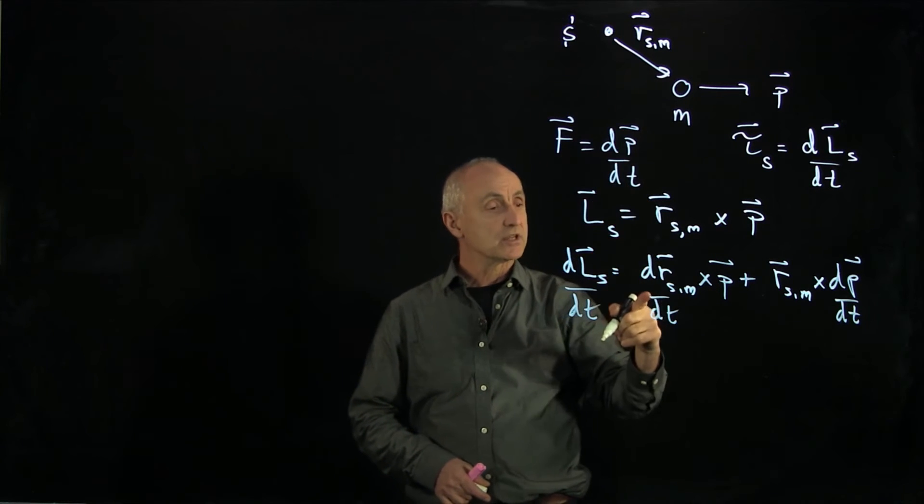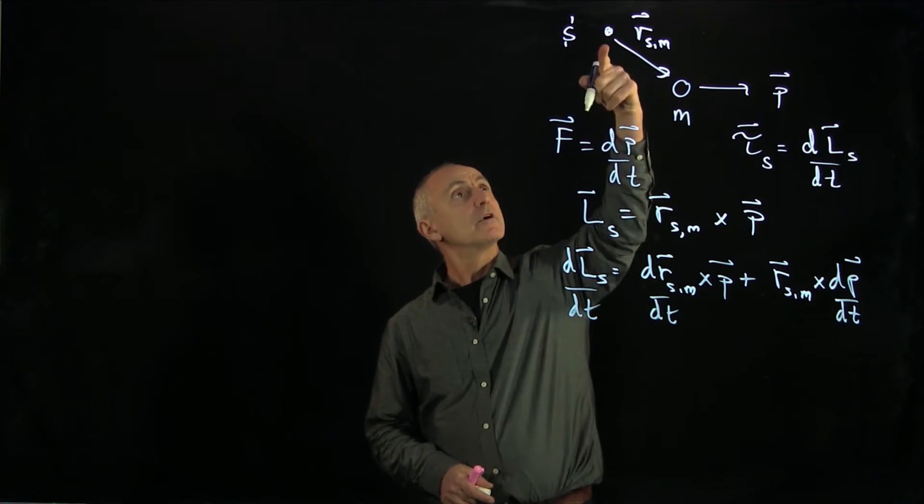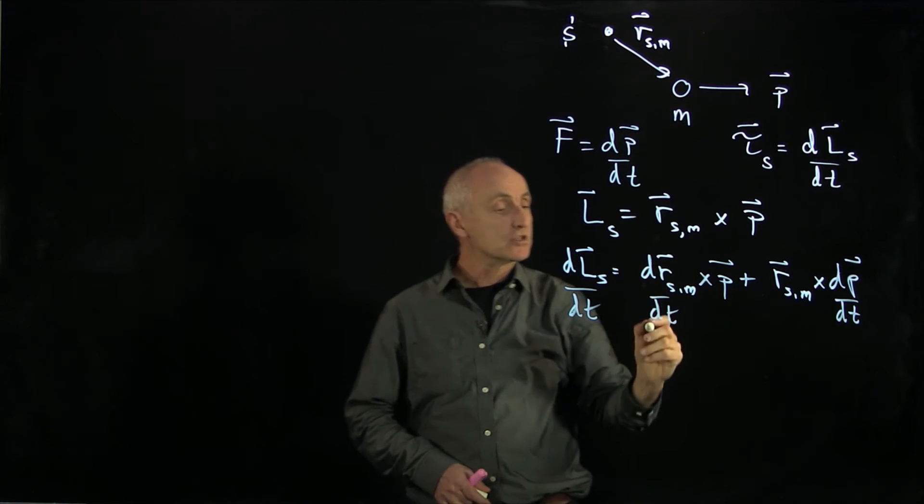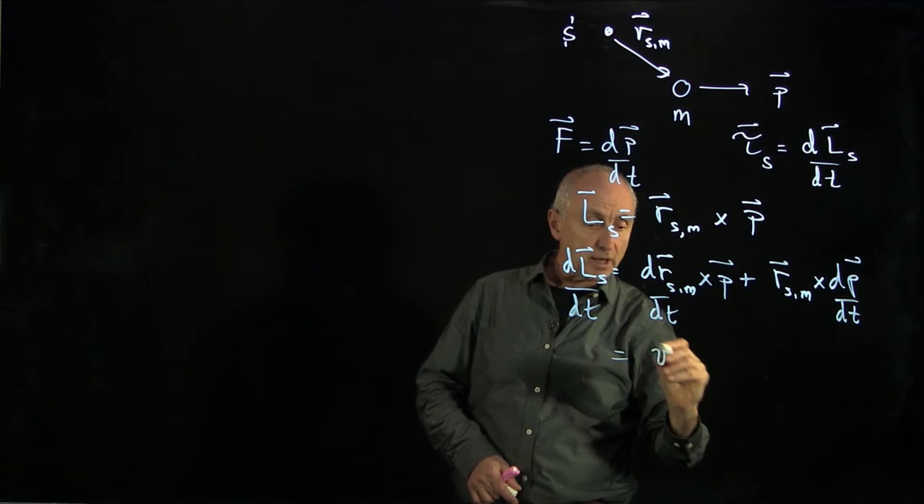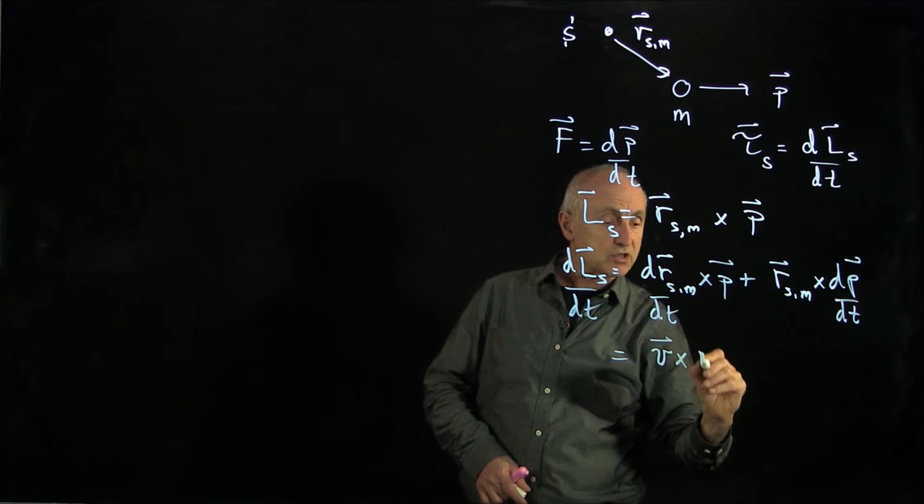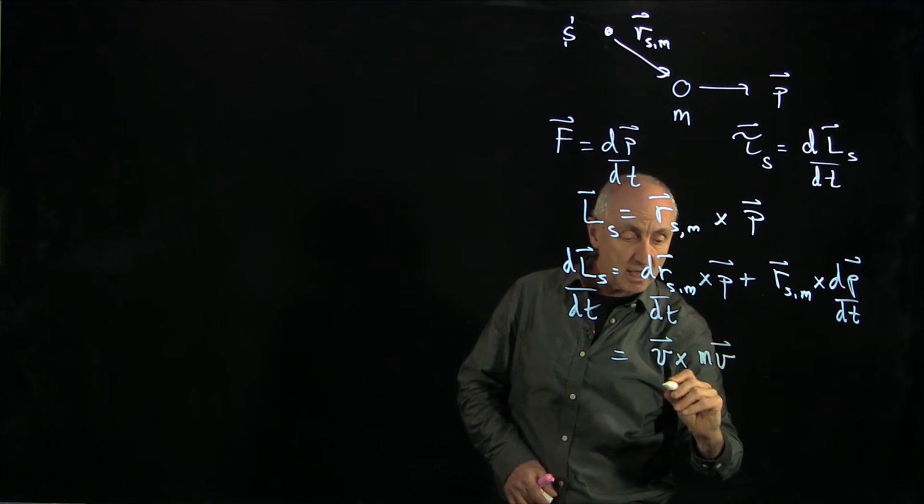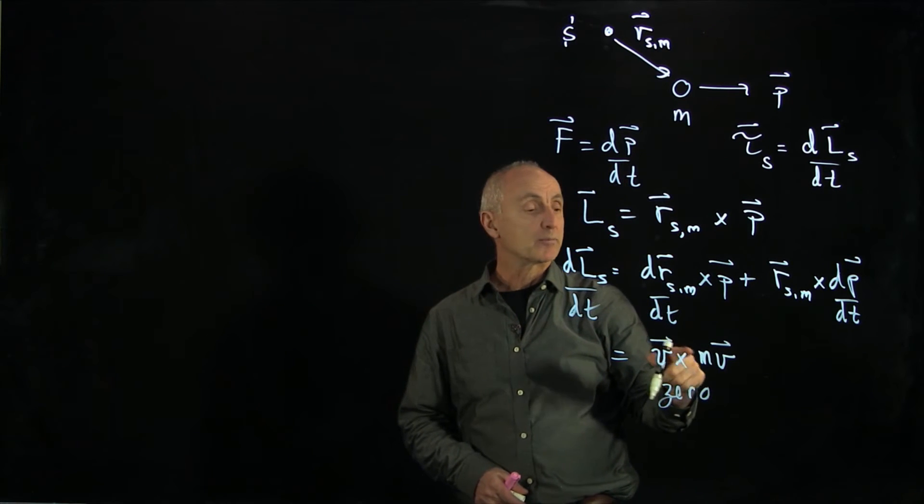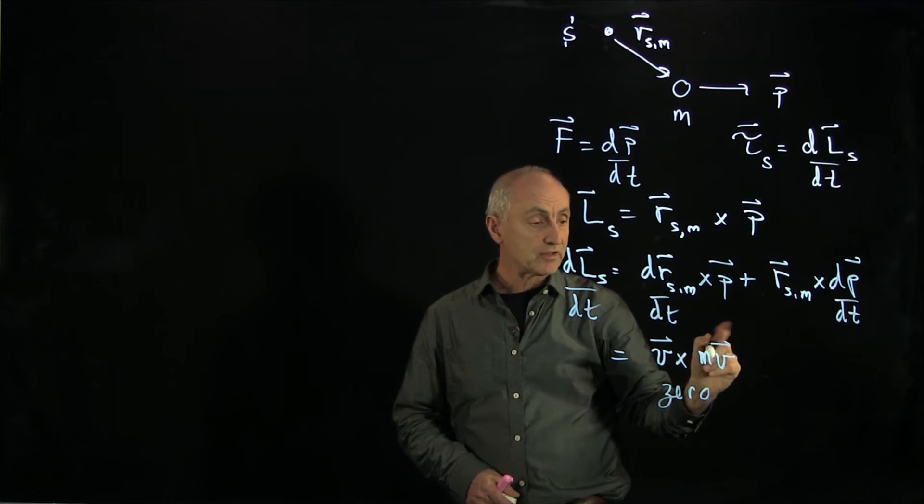Now, no matter what the point s is, the derivative of the vector that's measuring where s to the mass is is always the velocity of the object. So that's the velocity. And momentum is just mass times the velocity. And you can see that that quantity is 0 because a vector direct product with its cross product with itself is 0.